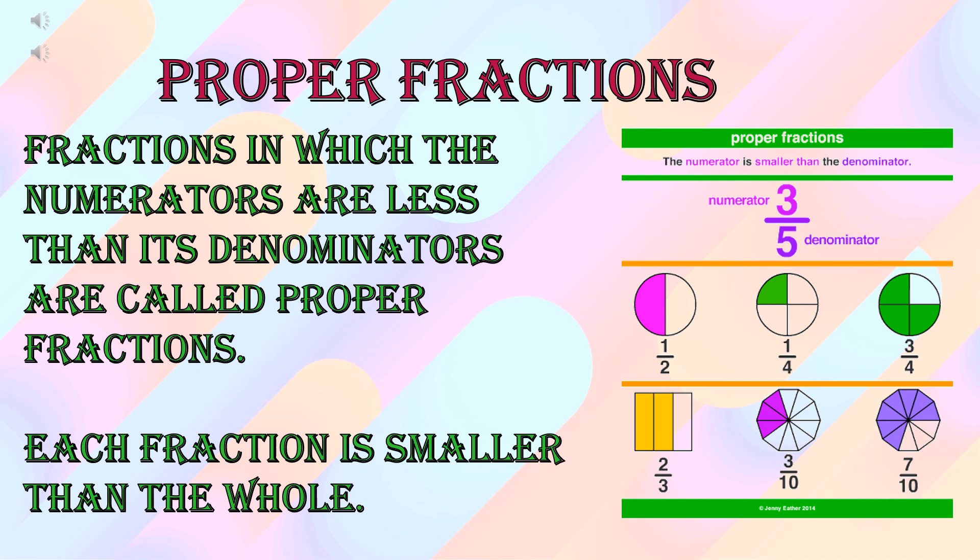Next, two by three — two is the numerator and three is the denominator, numerator is smaller than denominator, so it is a proper fraction. In the next example, three by ten or three-tenths — three is smaller than ten, so again numerator is smaller than denominator, it is a proper fraction. In the next example, seven by ten or seven-tenths — numerator is seven and denominator is ten, so numerator is smaller than denominator, it is a proper fraction.